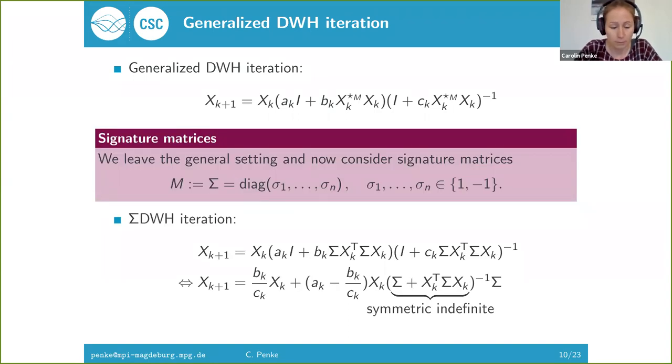Now we will look at a more specific case, which is the generalized polar decomposition with respect to signature matrices. A signature matrix is a diagonal matrix whose diagonal entries only consist of 1s and minus 1s. These matrices have the property that they are their own inverse. We can write down this generalized DWH iteration in this form.